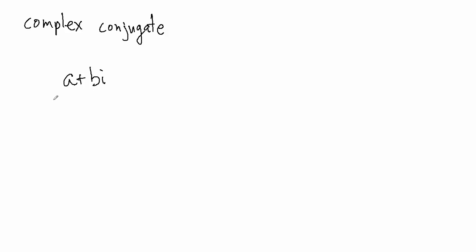If you have a complex number in standard form, then the complex conjugate is just going to be a minus bi. In other words, just change the sign of the imaginary part. We'll just see a couple quick examples, because there's really no calculations involved, just changing the sign around.